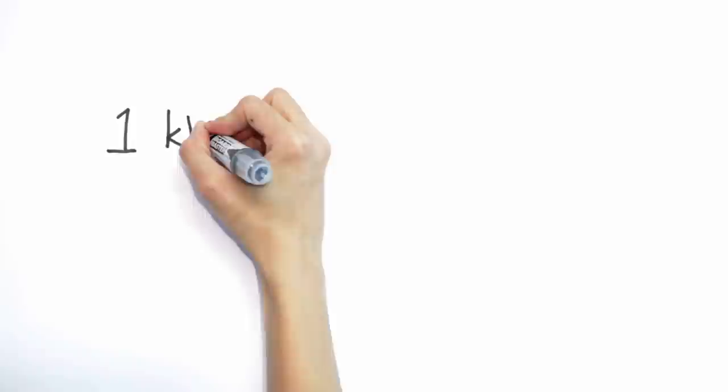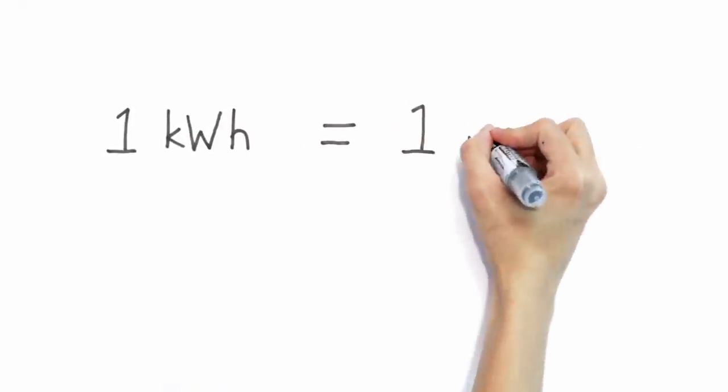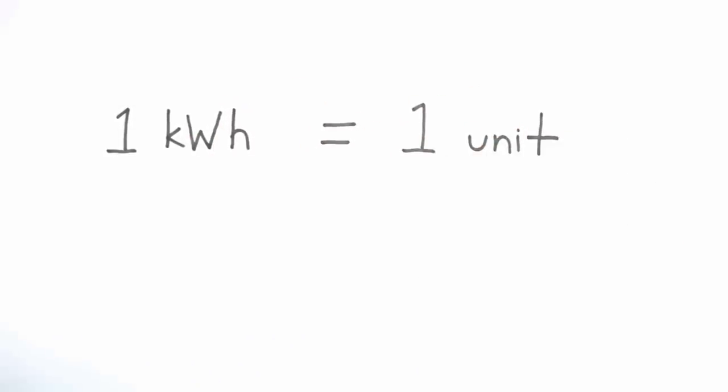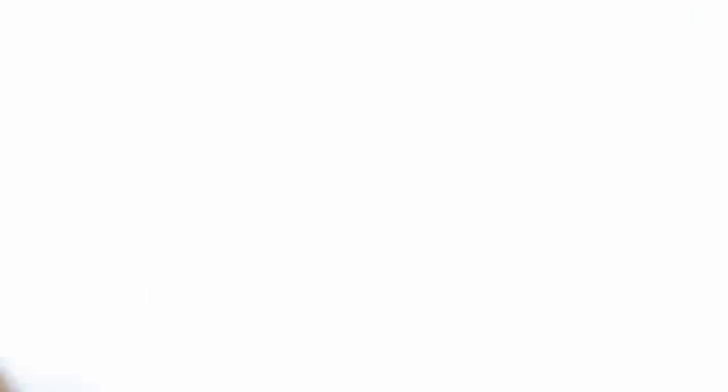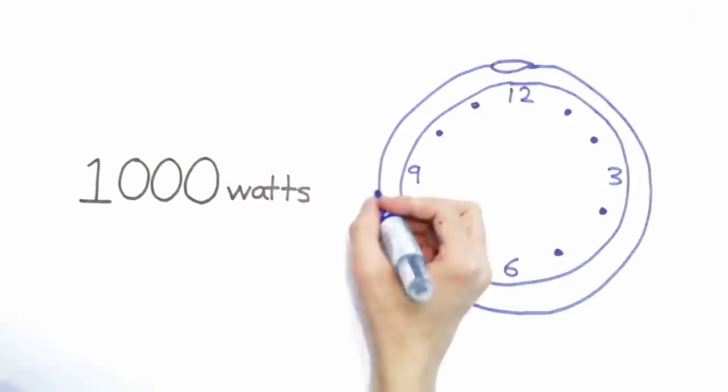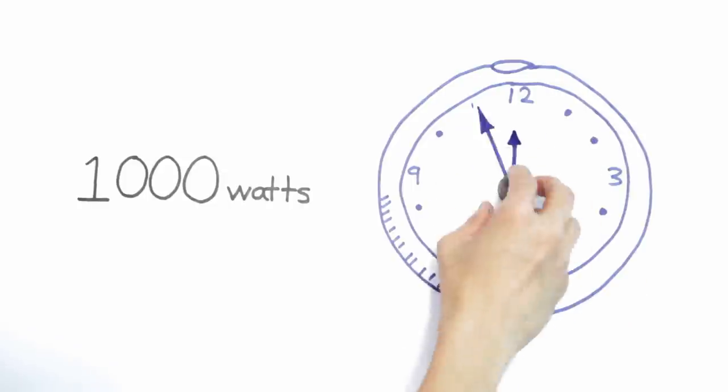We are charged based on how many units of electricity we use every month. A unit is 1 kilowatt hour. 1 kilowatt hour means 1000 watts being used continuously for an hour.